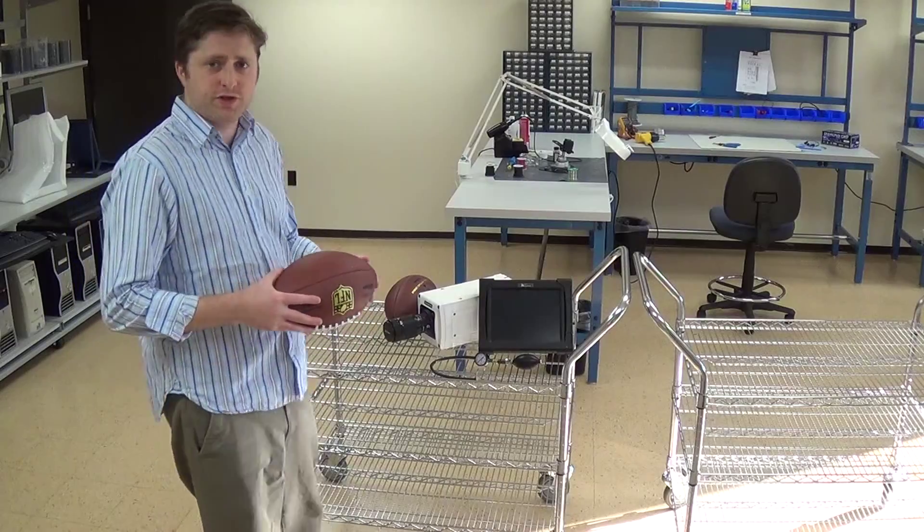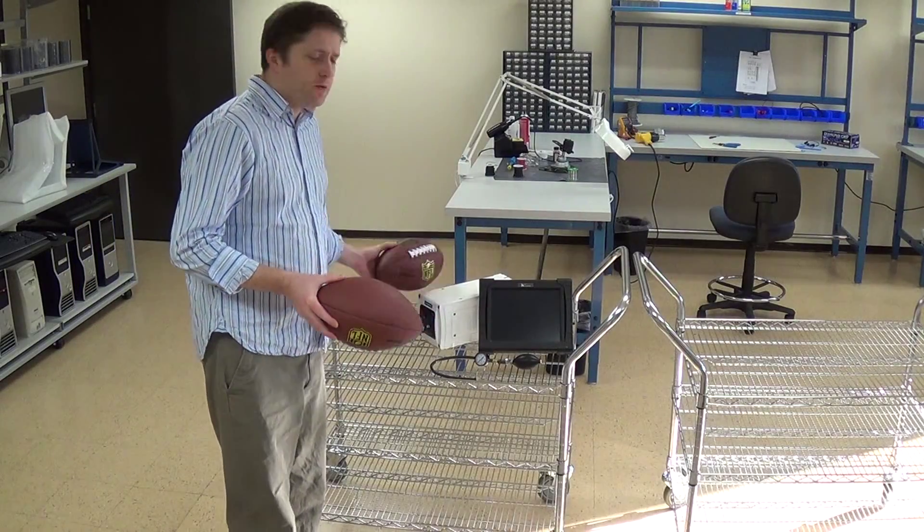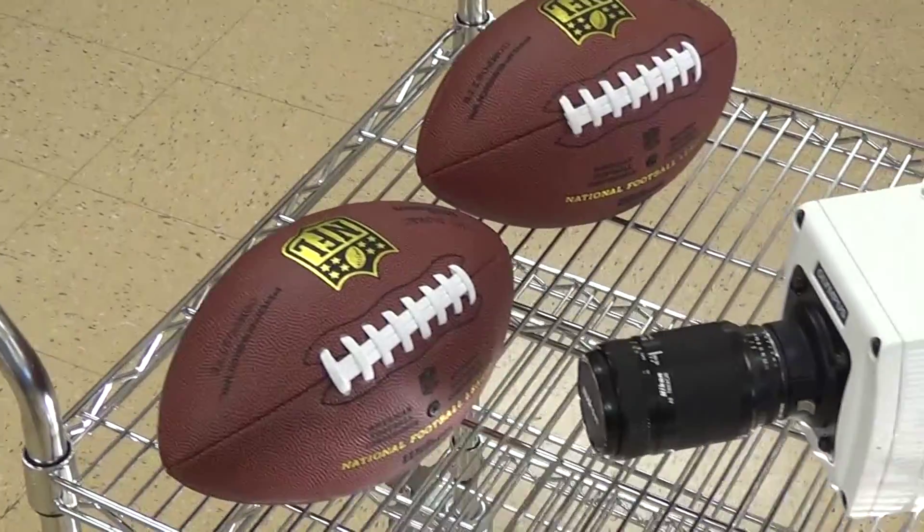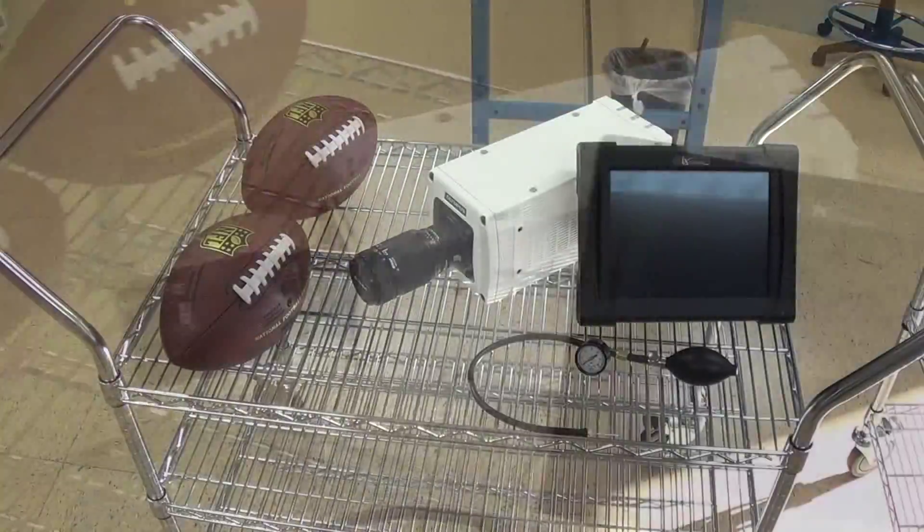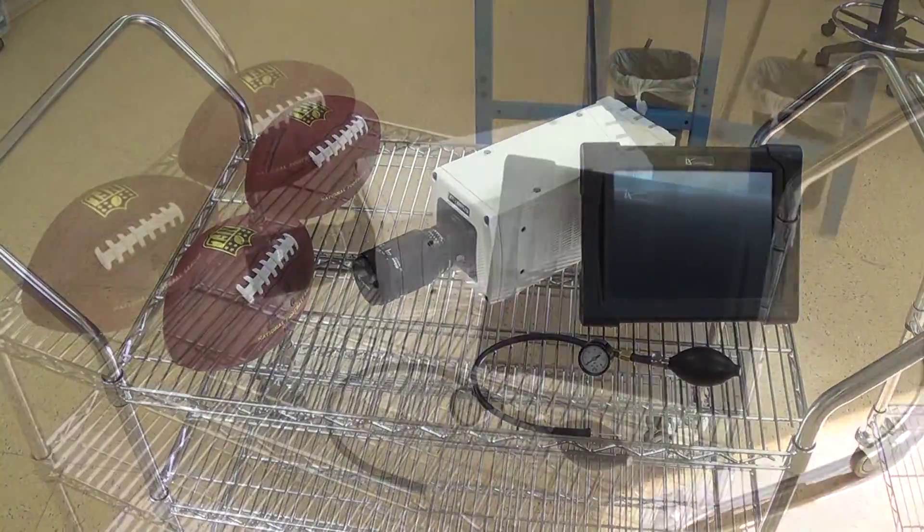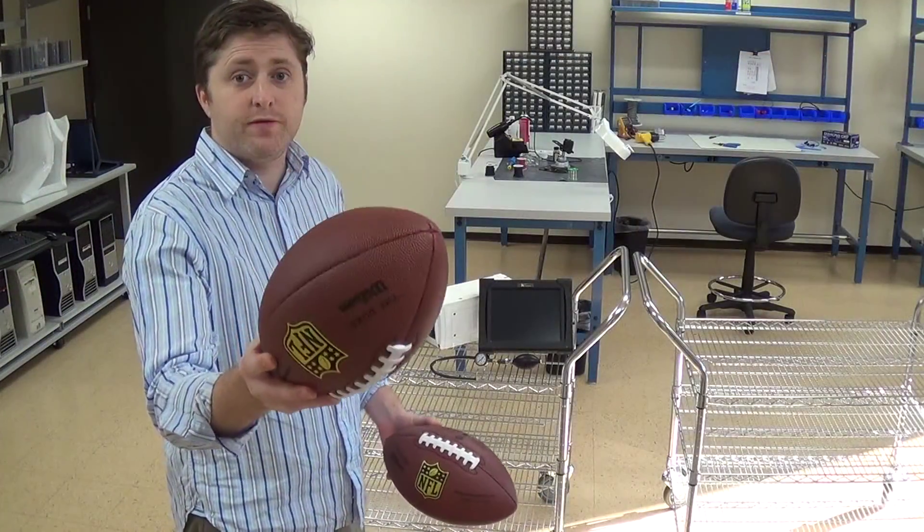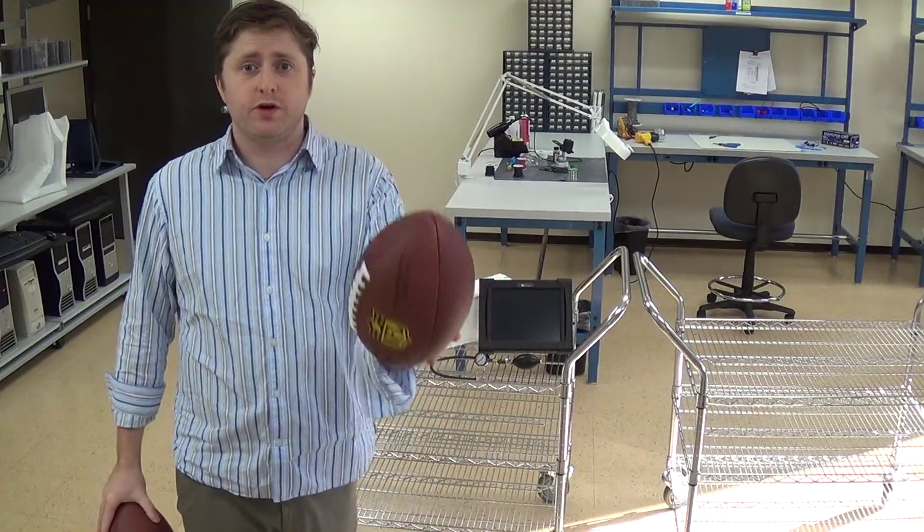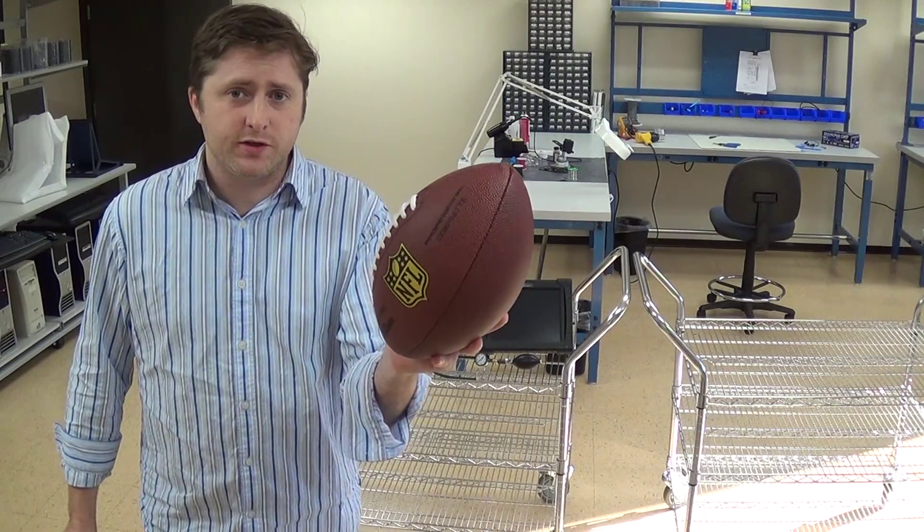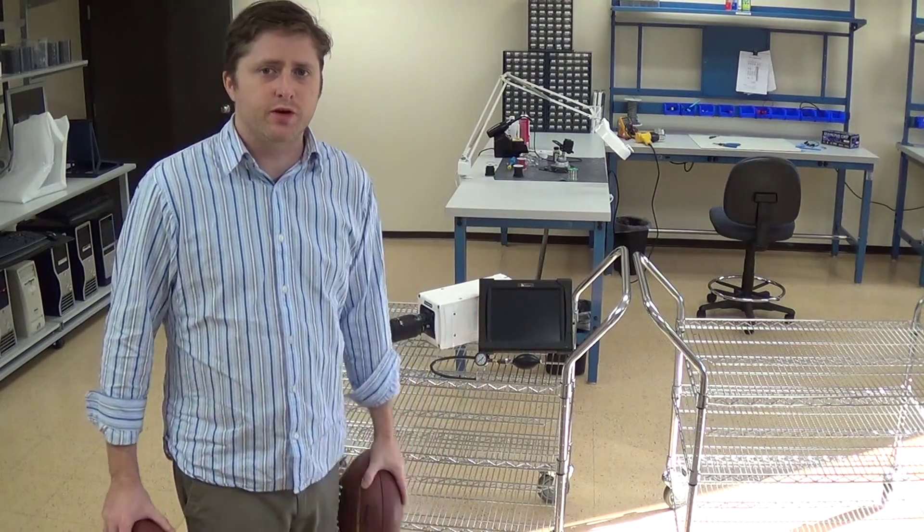In an attempt to add a little bit of science to the controversy of deflategate recently, we thought we'd take our software out and a couple of our high-speed cameras and measure the compression of a football inflated to 12.5 pounds per square inch versus a football inflated to 10.5 pounds per square inch.